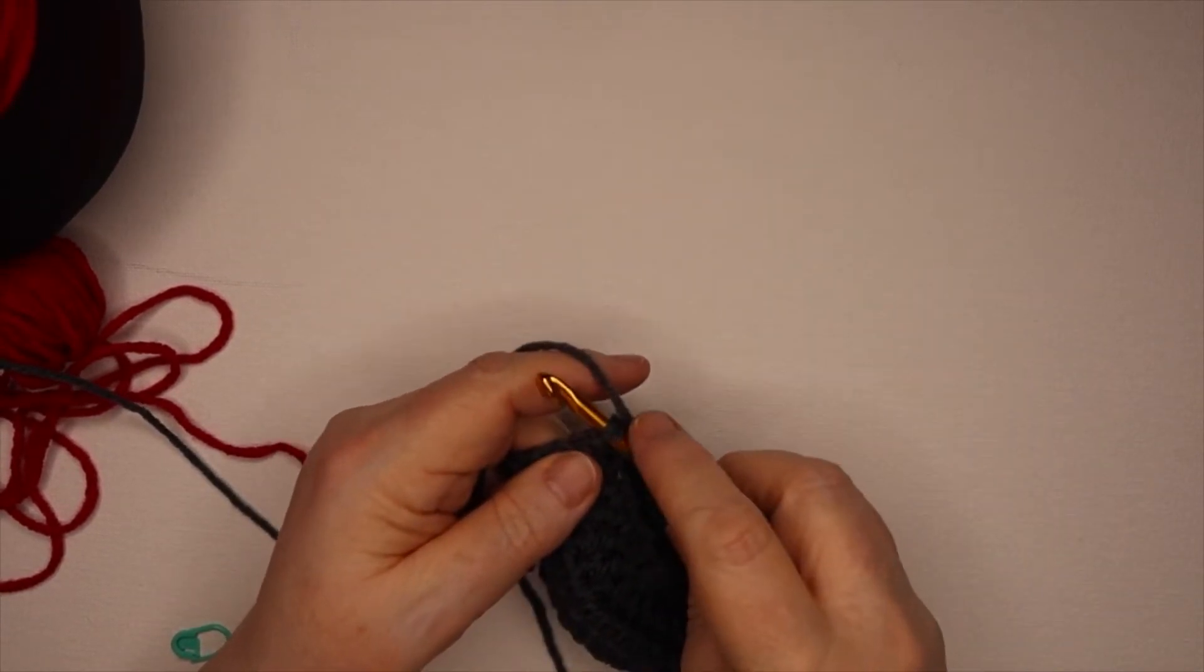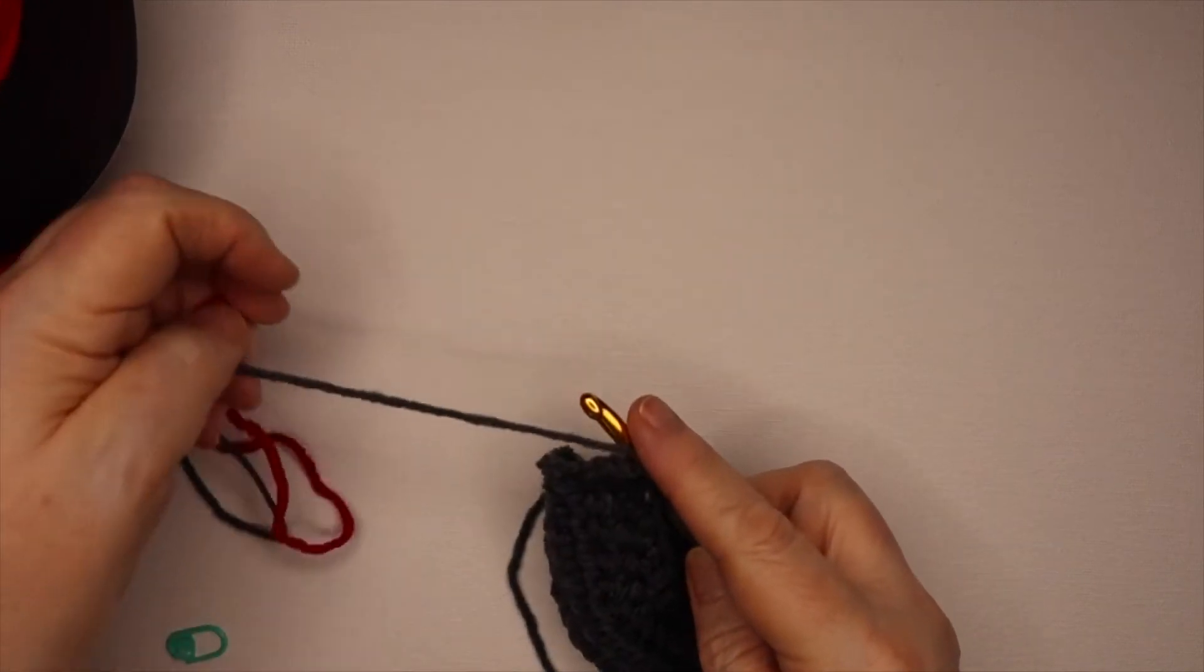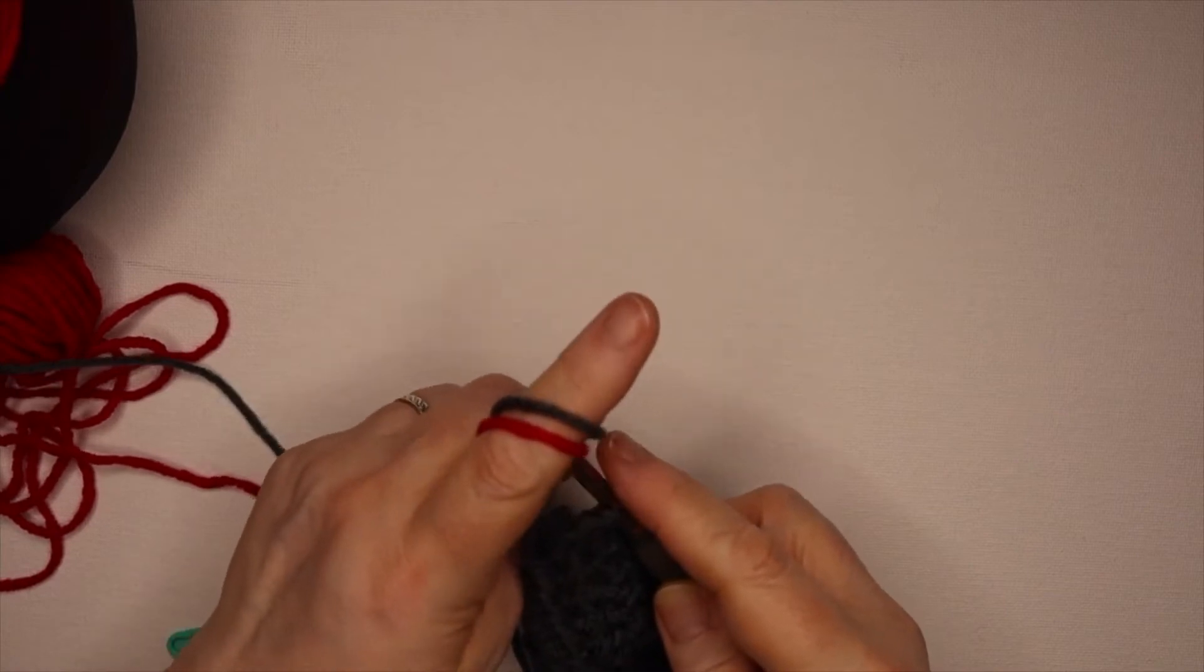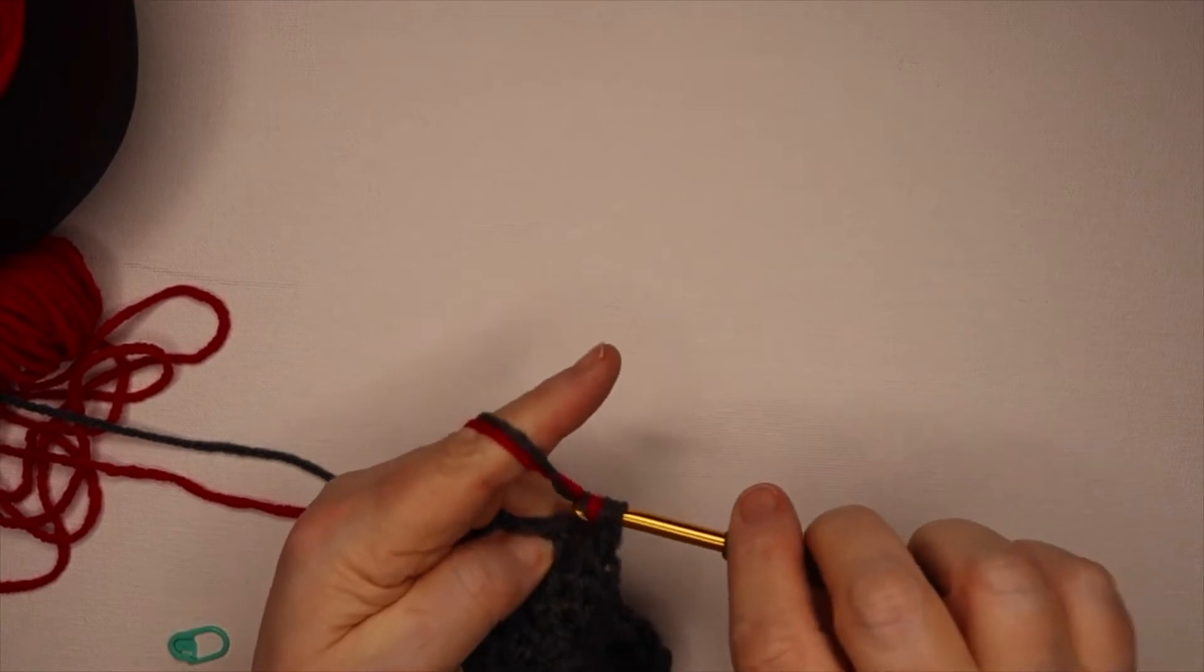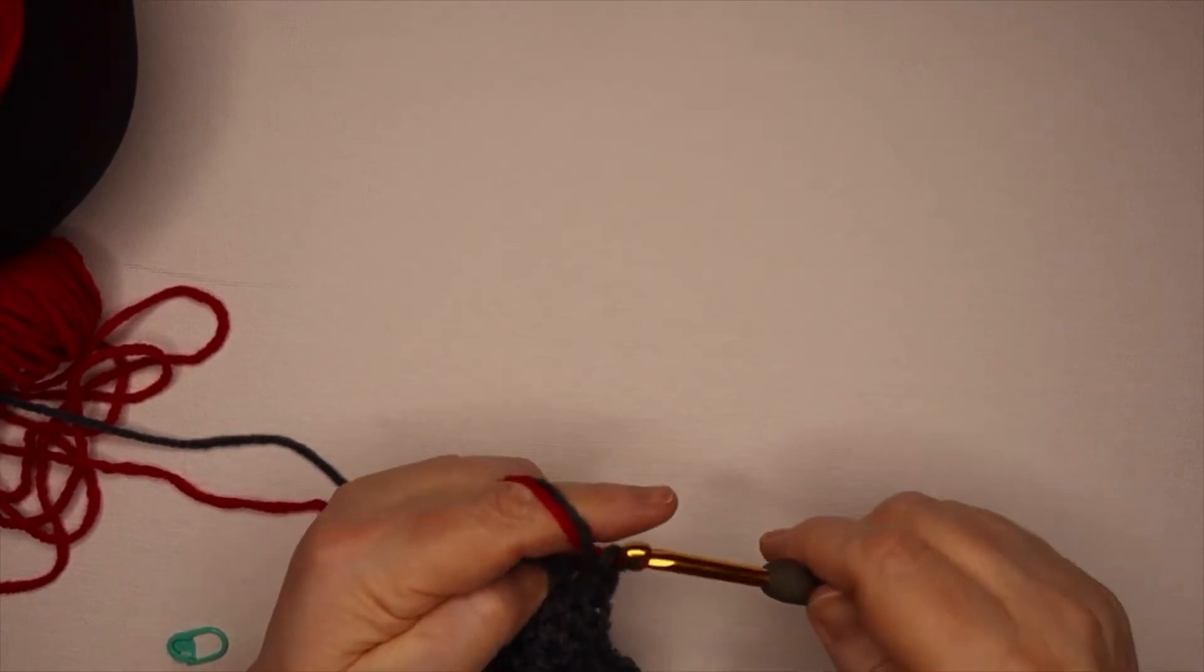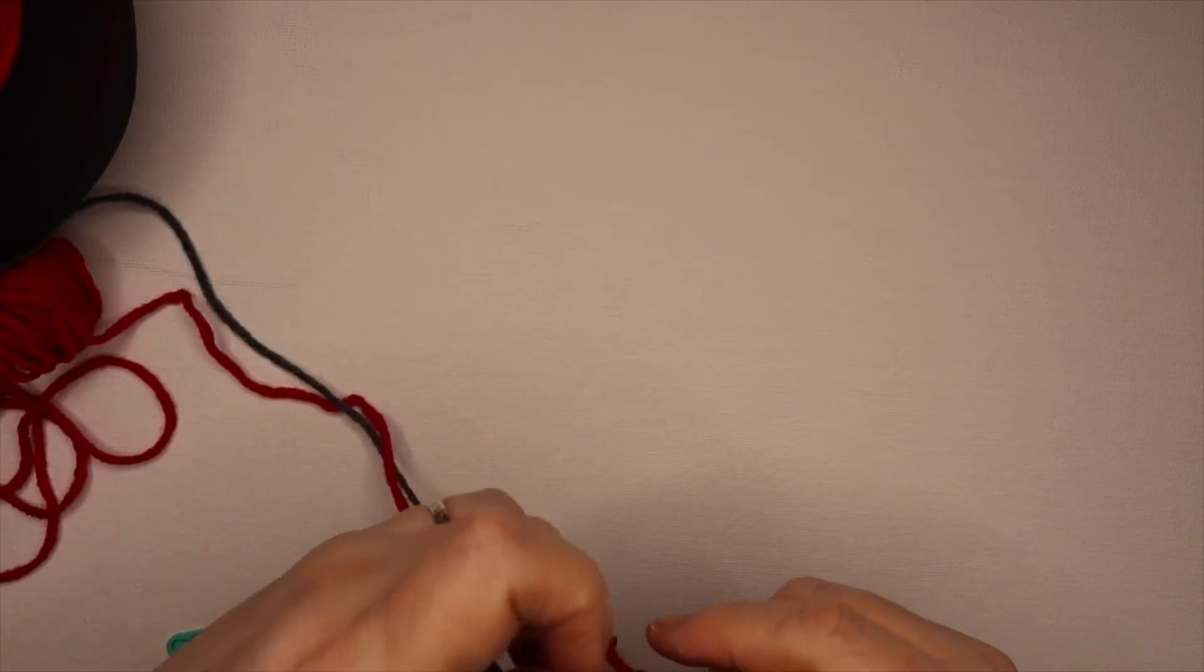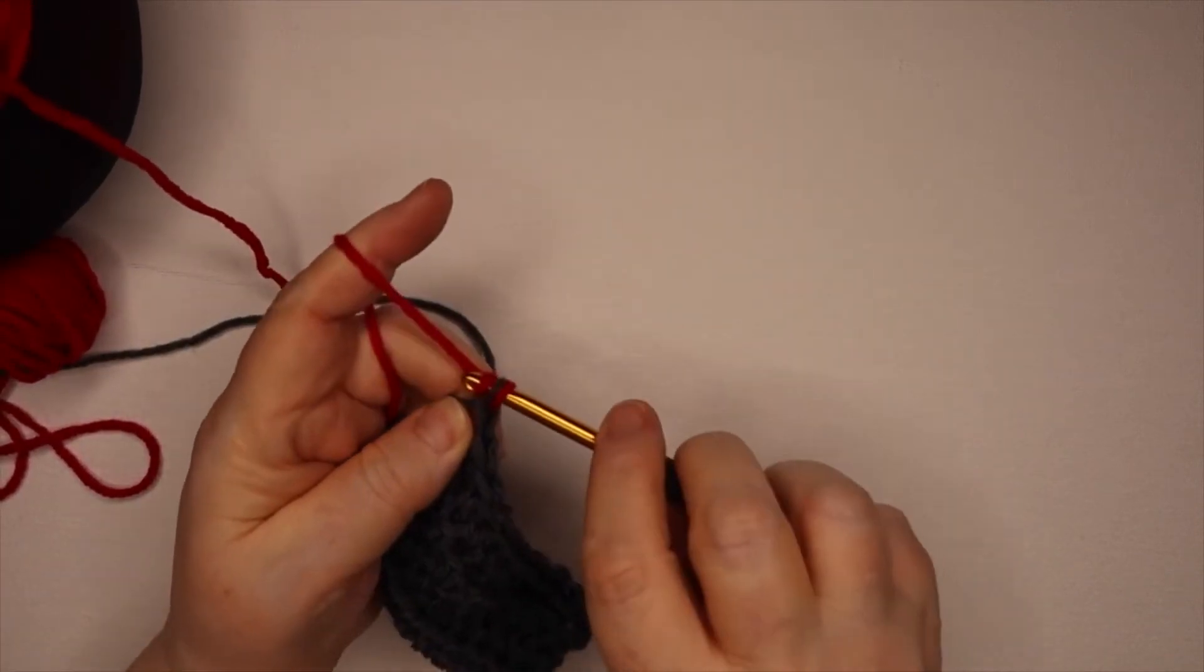And then I will pull up both of these together this way with a long tail for both. Pull up, yarn over, and pull through all three of those loops. Then from there, I'm going to pick up my red color, chain one.